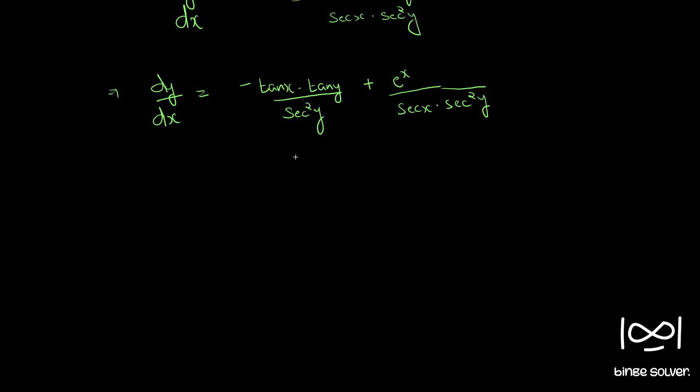So if you multiply throughout by sec square y and rearranging we have sec square y into dy by dx, and bringing this term to the LHS we have tan x tan y equal to e raised to x by sec x.